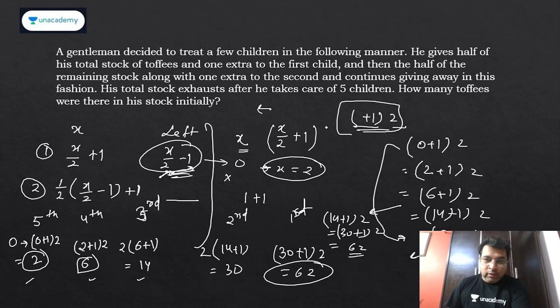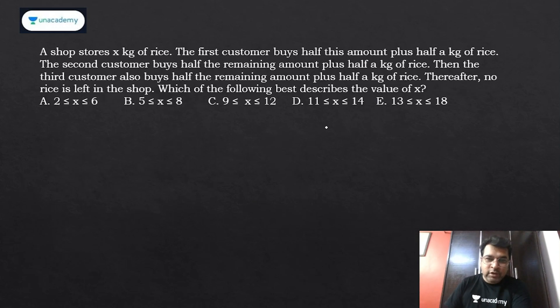Now I'll do another question which was in CAT 2008. Same concept with a slight difference. A shopkeeper has x kg of rice. The first customer buys half of the amount plus half a kg. The only difference is half a kg - earlier we were giving one toffee extra, now I'm giving half kg of rice extra. There are three customers total.